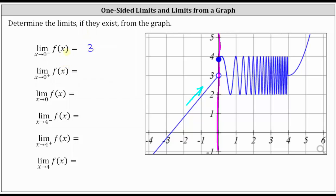Notice how this is not the same as the function value f of zero. f of zero was determined by the y-coordinate of this closed point here, where the y-value appears to be approximately 3.8. So f of zero is equal to approximately 3.8, which does not affect the one-sided limit or the limit from the left.